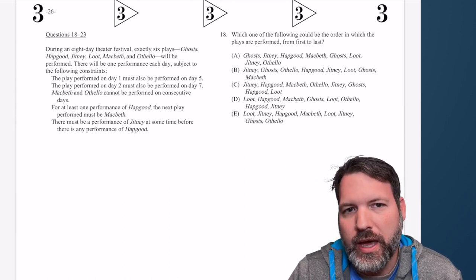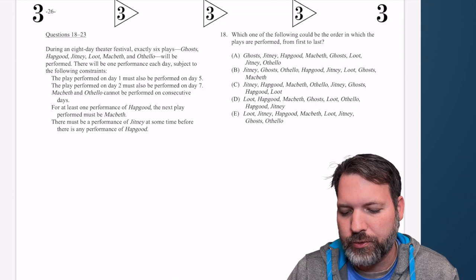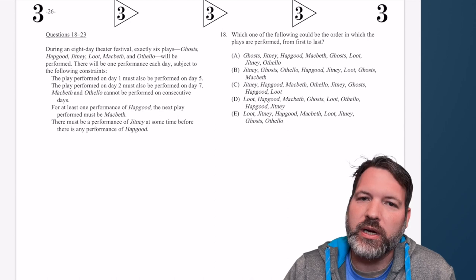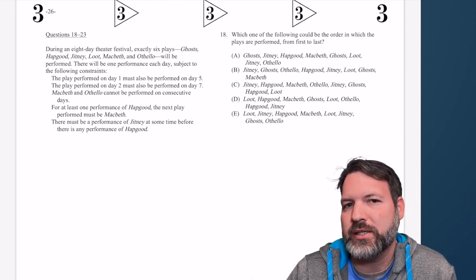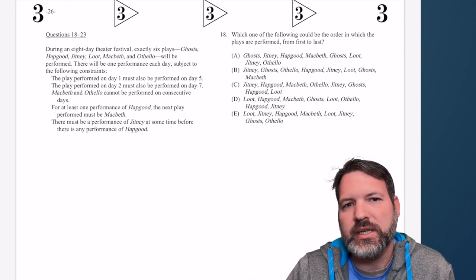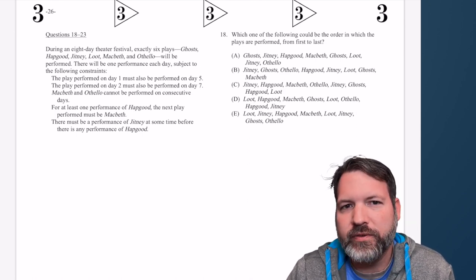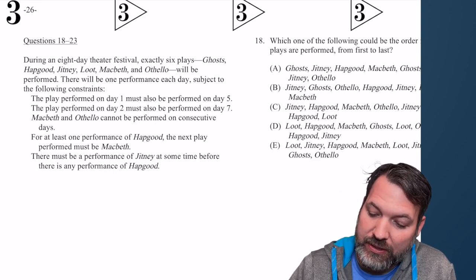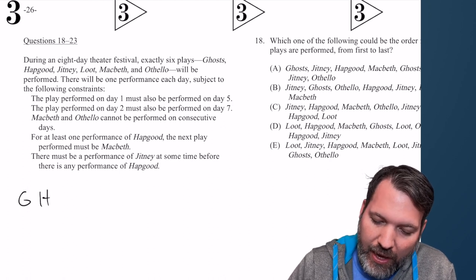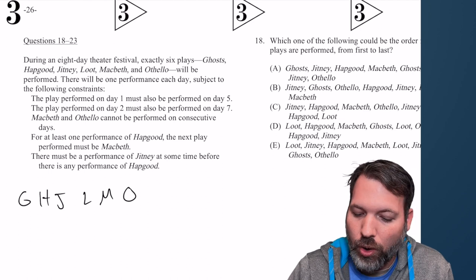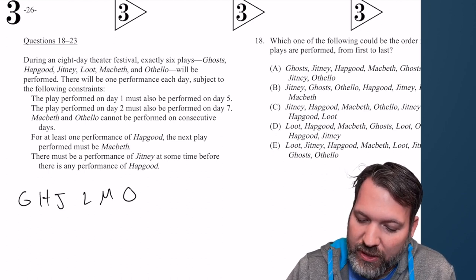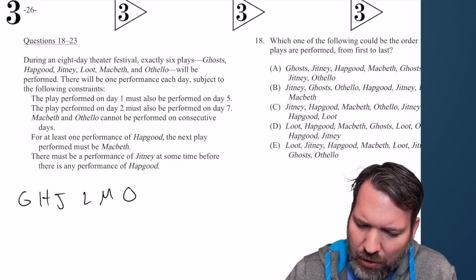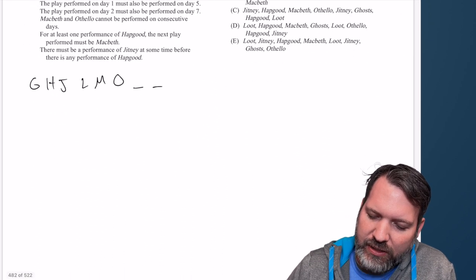With that being said, let's get into the fourth game of Prep Test 90, game four, questions 18 through 23. Kind of an odd section so far, not particularly difficult in terms of the setups, but there have been a couple of wrinkles along the way that have probably pushed our pacing pretty close to that 26, 27 minute mark as we're getting into this final game. Let's take a look. During an eight-day theater festival, exactly six plays, and we get our elements right off the bat: G, H, J, L, M, and O will be performed.